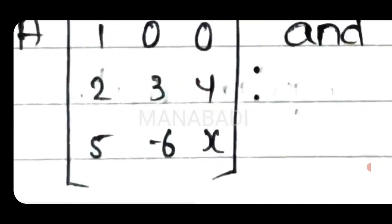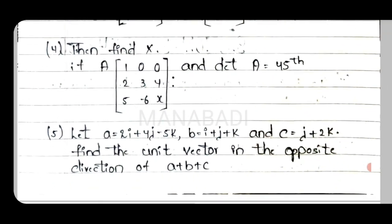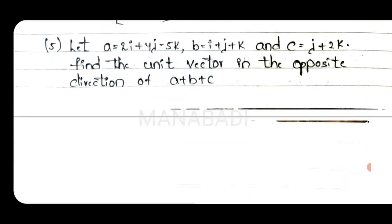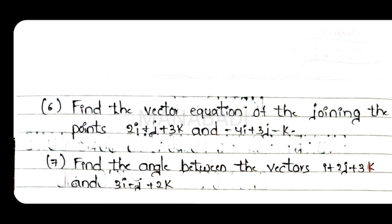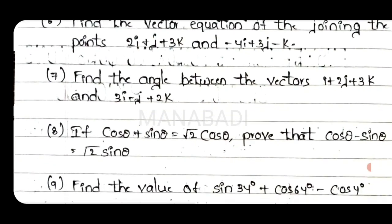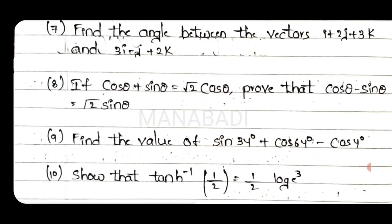Fourth question: a 3x3 matrix question. Fifth question: vectors — A, B and C equations given; find the unit vector in the opposite direction of A plus B plus C. Sixth question: find the vector equation of the line joining the points 2i plus j plus 3k and minus 4i plus 3j minus k. Seventh question: find the angle between the vectors i plus 2j plus 3k and 3i minus j plus 2k.